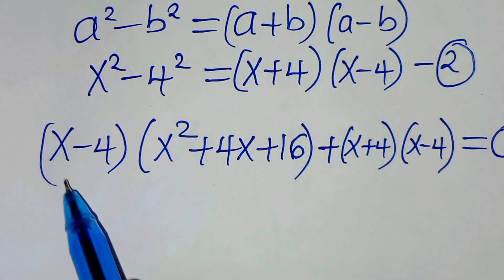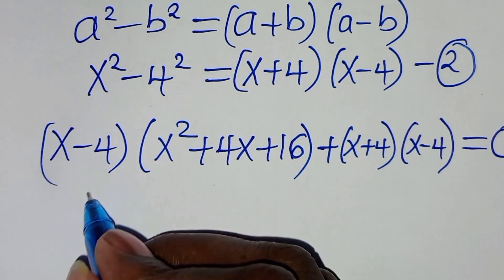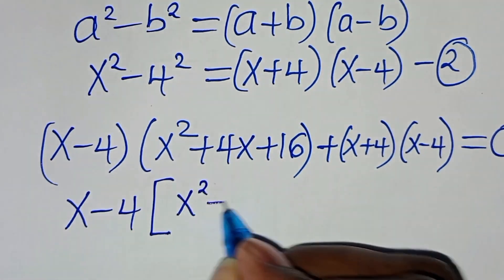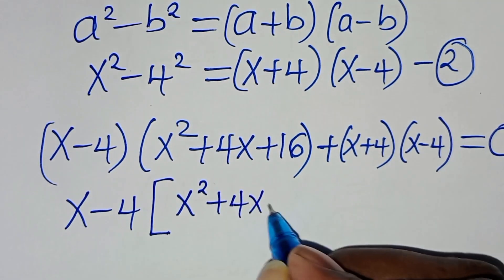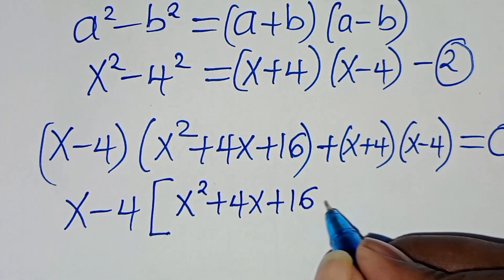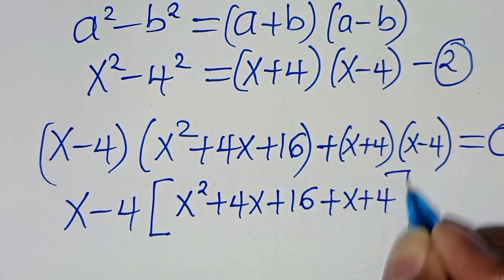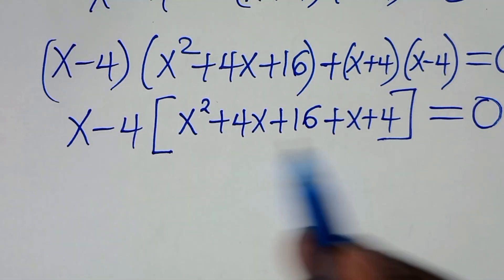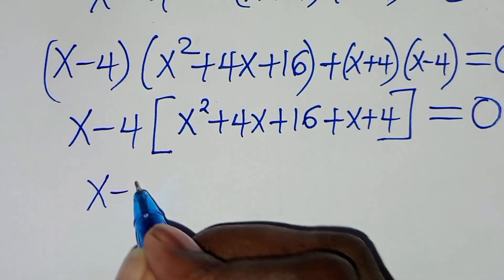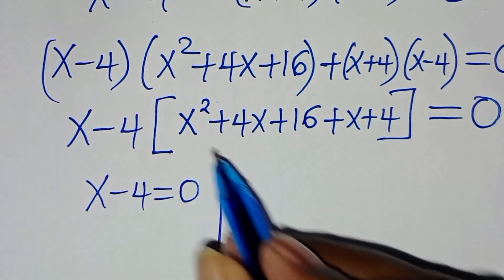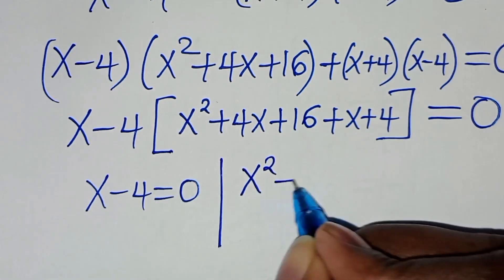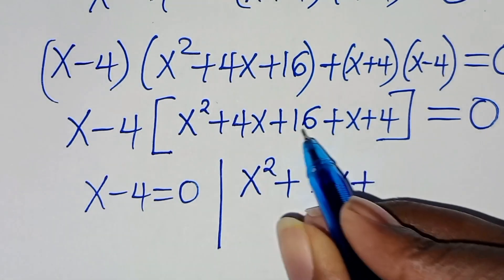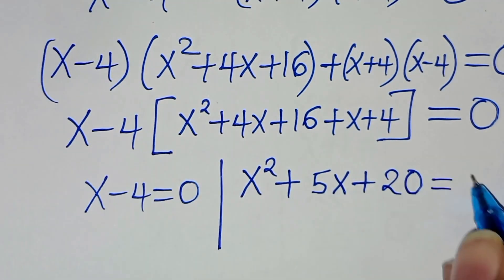Factoring out (x minus 4), we combine the terms inside the parentheses. We get two parts: the first part is (x minus 4) equals 0, and the second part is x squared plus 4x plus x plus 16 plus 4, which simplifies to x squared plus 5x plus 20, equals 0.